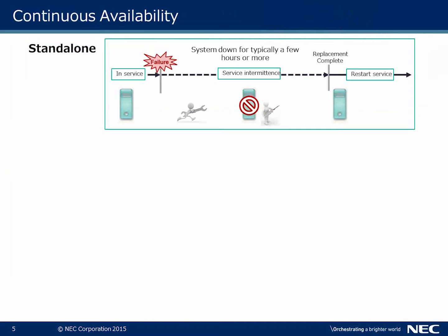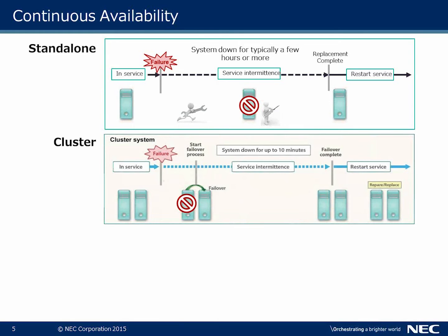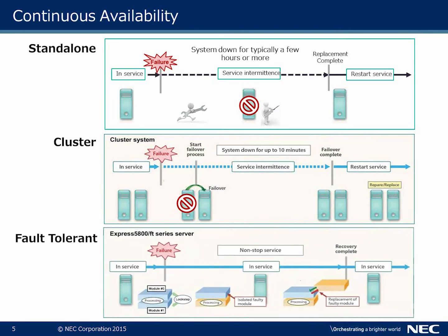For continuous availability in a standalone scenario: if the system is in service and there's a failure, it's typically down for a few hours or more — you must get a replacement before restarting service. With clustering, there's a failure, then the failover process starts. The system can be down for up to 10 minutes or more, service is highly intermittent during failover, and you can restart service only after repair or replacement.